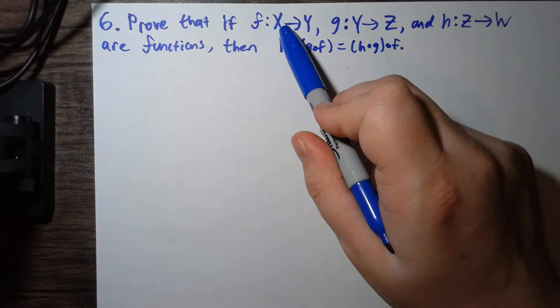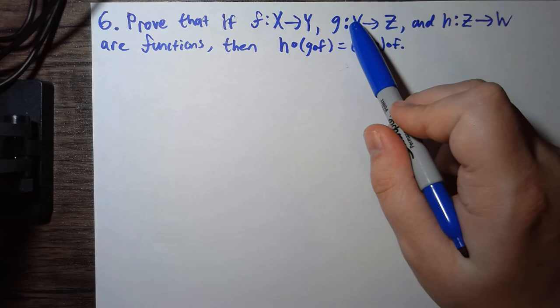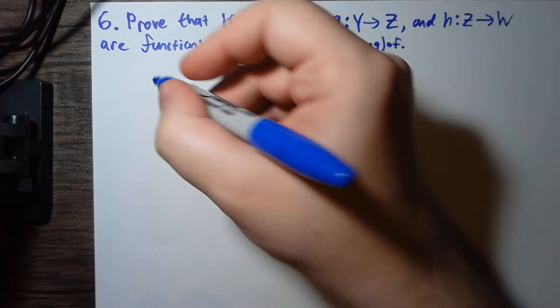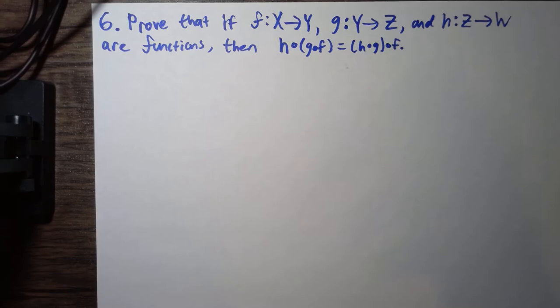So on this right-hand side, we're inputting an element of X, getting an element of Y, and then h∘g will take in that element of Y and output an element of W. So this will be a function from X to W.